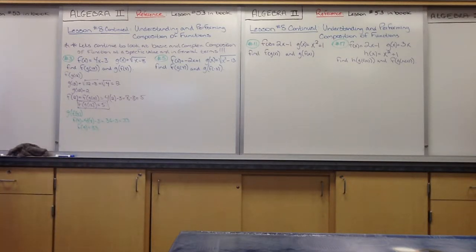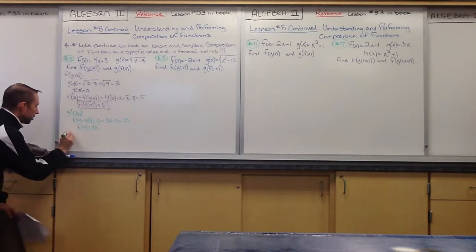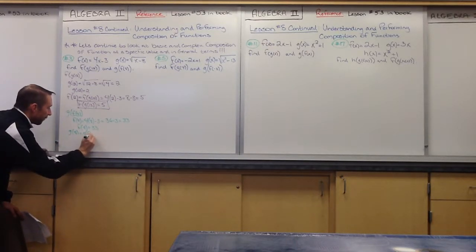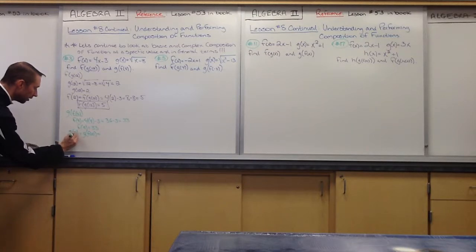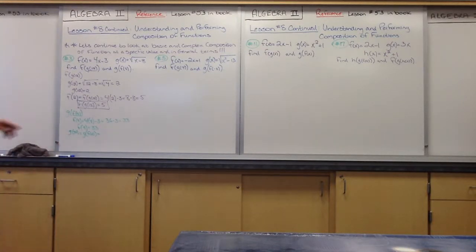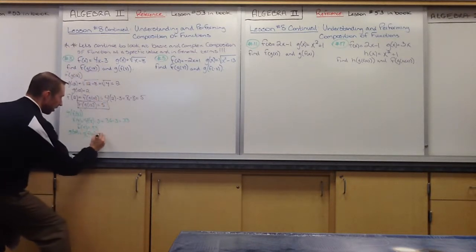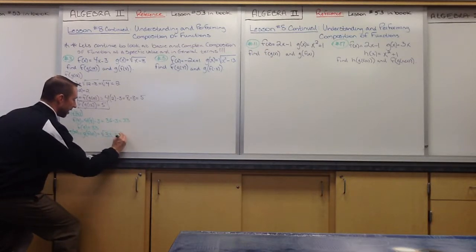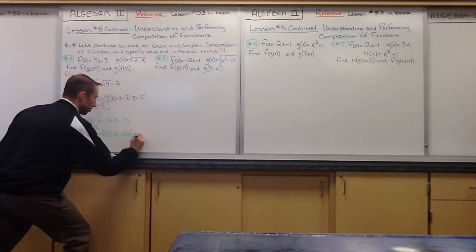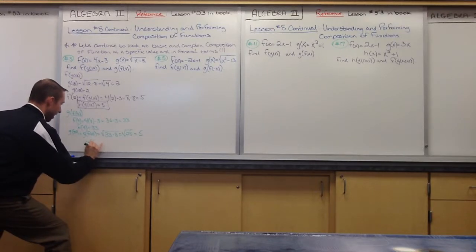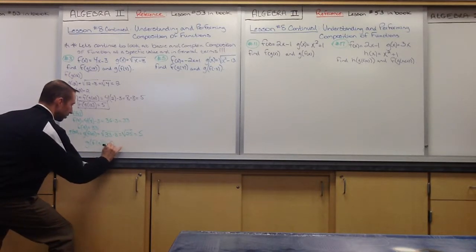Now what do I do with that f(9)? Plug it into your outermost function, which is g(x). So now we get g(f(9)), which is the same as g(33), because we know f(9) is equal to 33. So we plug 33 into my g(x) function in place of x. We get the square root of 33 minus 8, which is the square root of 25, which is equal to 5. So my g(f(9)) is equivalent to 5.